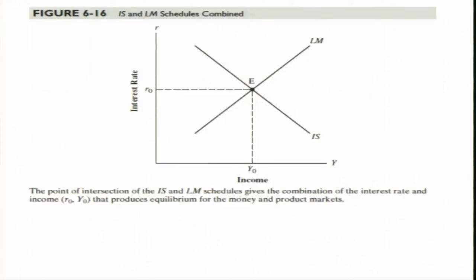Diagrammatically we can show that the LM curve and the IS curve intersect at the equilibrium position, where both product market and money market are in equilibrium. The equilibrium level of rate of interest is R naught and the equilibrium level of income is Y naught.